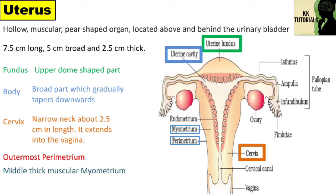The innermost layer called endometrium or mucosal membrane is made up of stratified epithelium. The thickness of this layer regularly undergoes changes during the menstrual cycle. It is richly supplied with blood vessels and uterine glands, which provide nourishment to the developing fetus.